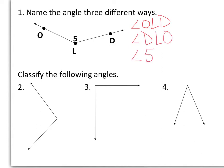Now with naming angles, order does matter. Notice in the first two ways that L, the vertex, is in the middle. Also angle 5 is at the vertex, but angles go in order. I go from O to L to D, or D to L to O. So the middle letter tells us exactly where that angle is.